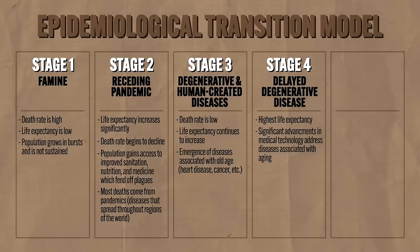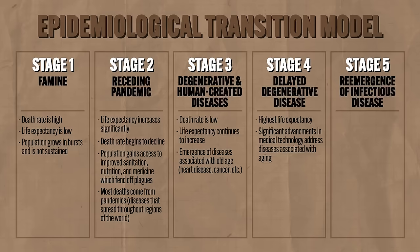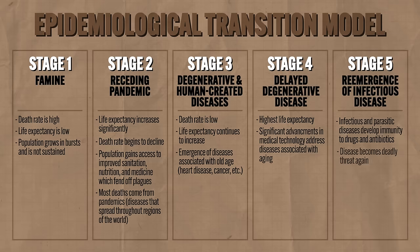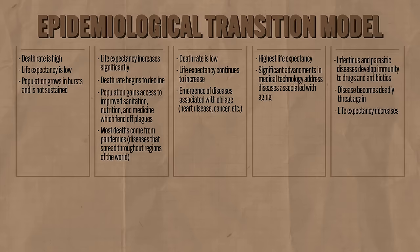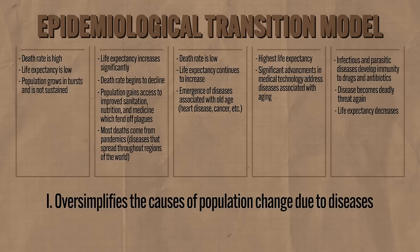Stage five is the re-emergence of infectious disease phase. Infectious and parasitic diseases develop immunity to our drugs and antibiotics, come right back, and life expectancy decreases. The main critique of the ETM is that it oversimplifies the causes of population change due to disease and doesn't account for differing historical periods or locations. Additionally, the ETM doesn't account for poverty as a cause of the spread of disease — a major omission, since poverty is one of the most significant causes of shortened lifespans.